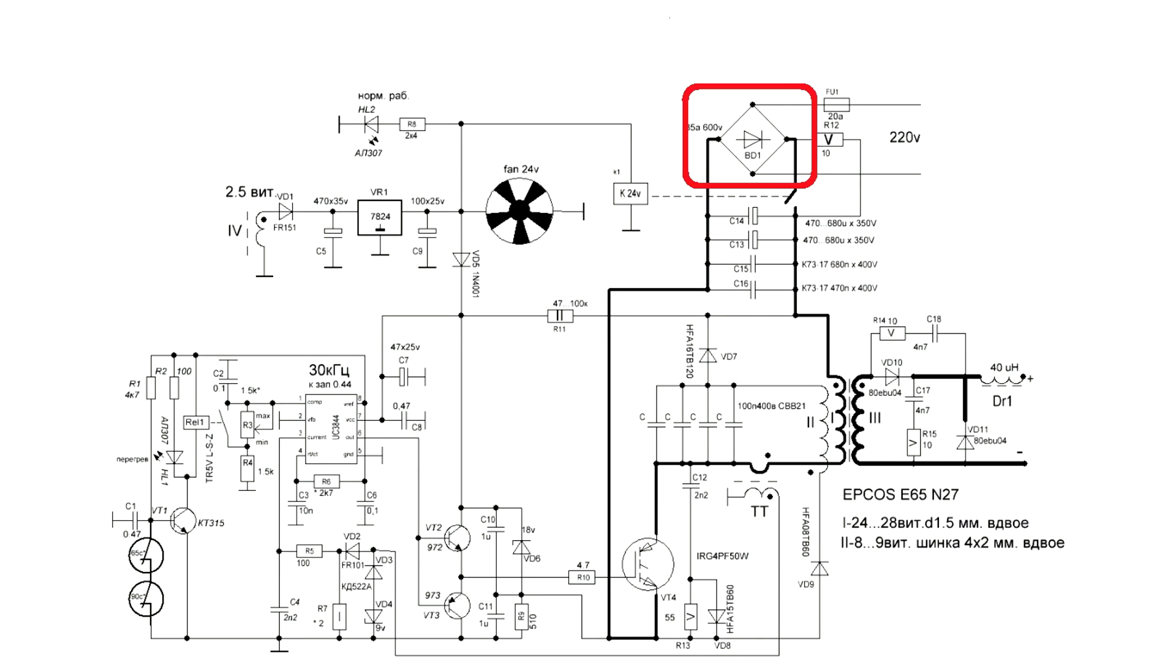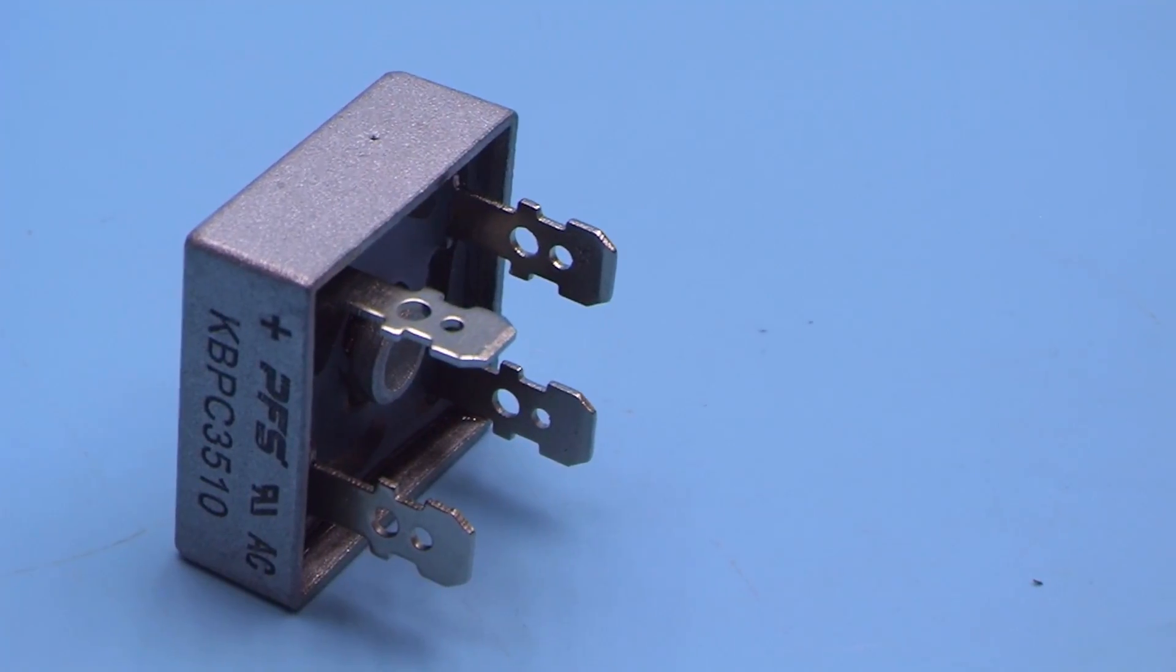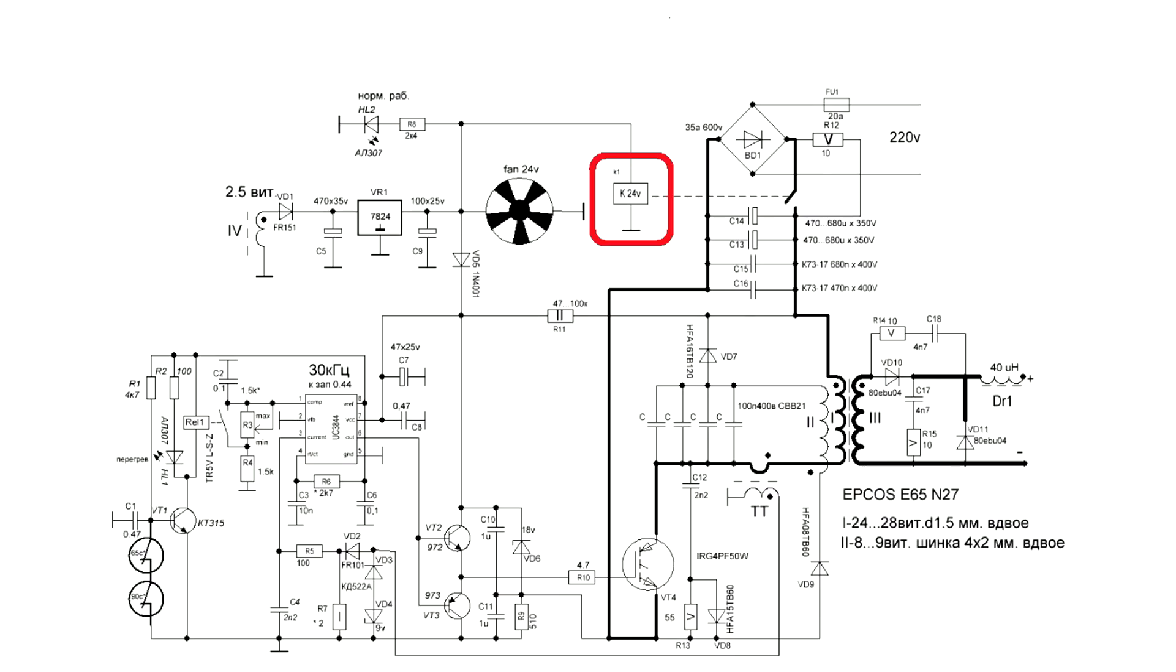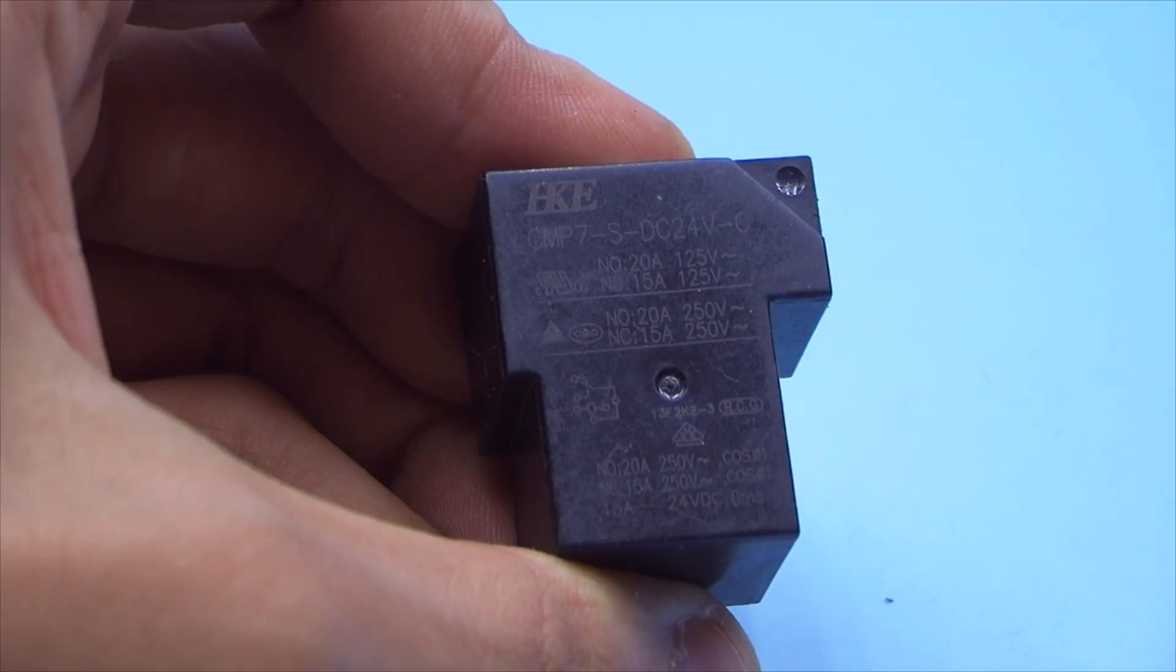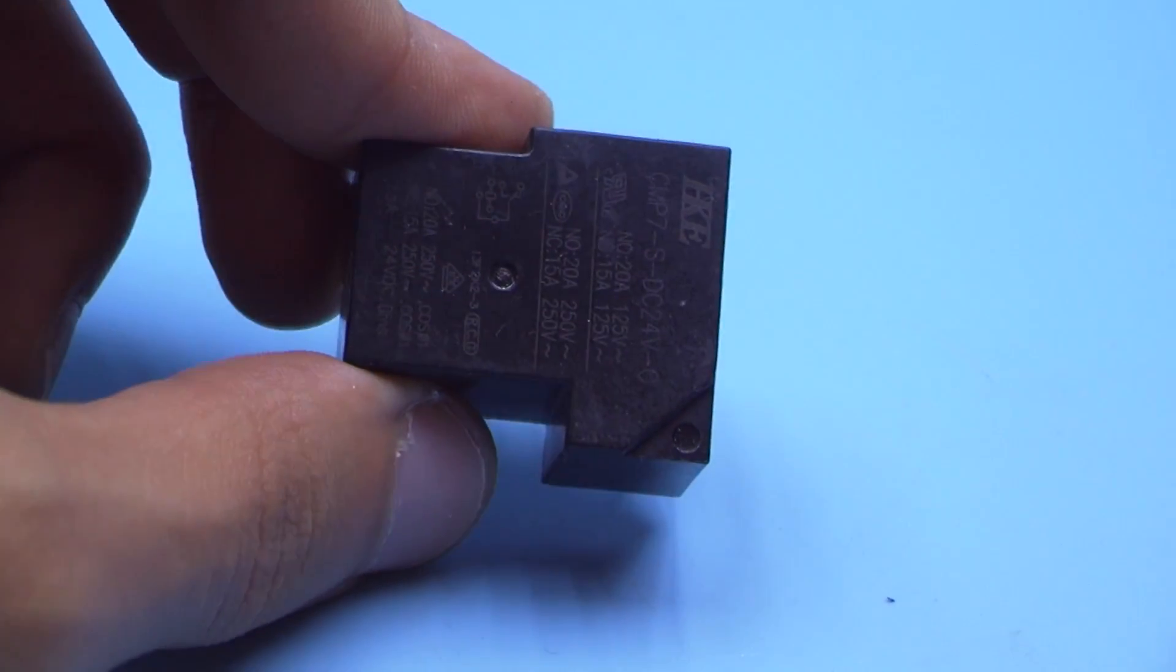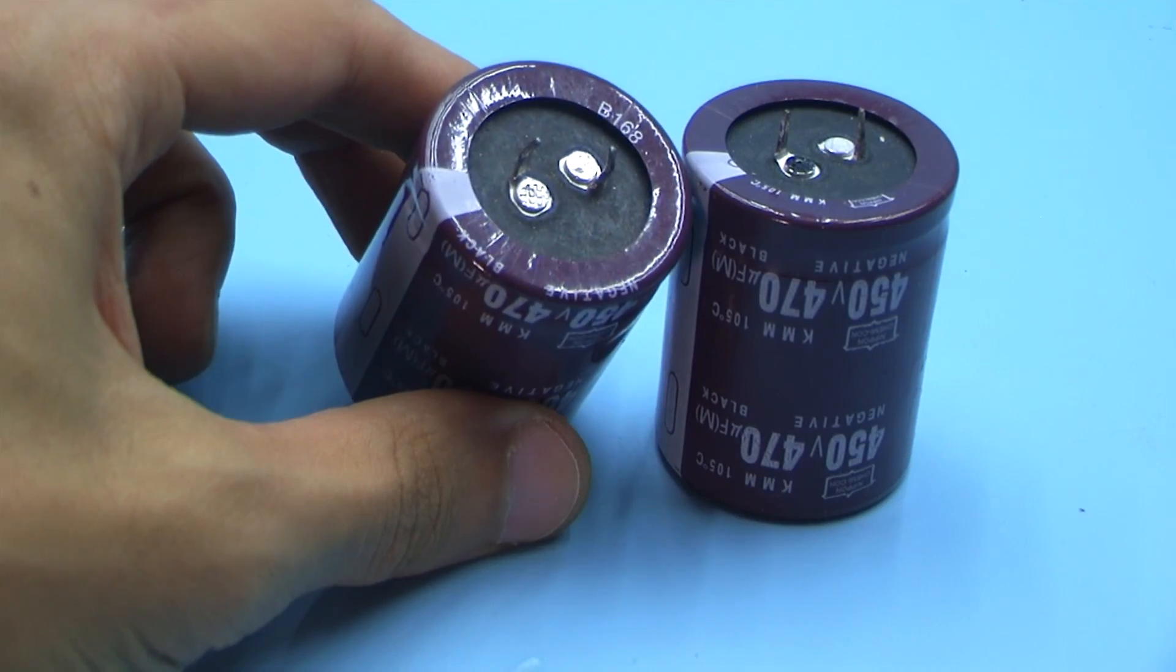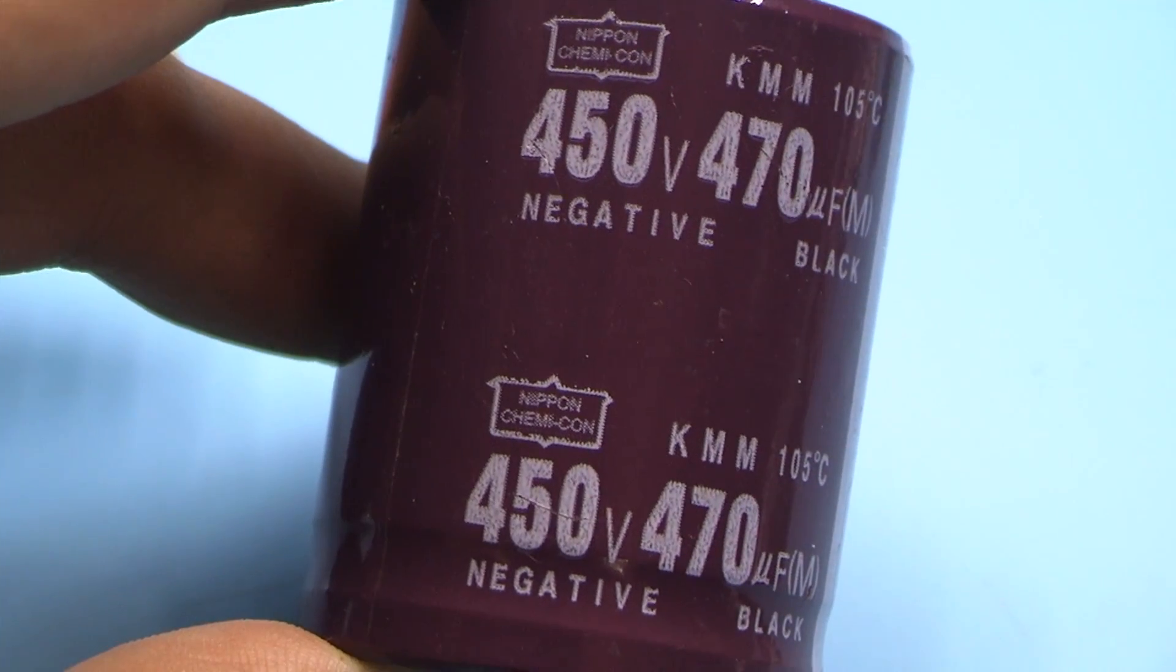Input part. As a diode bridge taken ready assembled KBPC3510. It's for 35 amps, reverse voltage of 1000 volts, mounted on a radiator. The power relay in the soft start circuit with a 24 volt coil is designed for a current of 15 to 30 real amperes. If the welder is planning on currents of more than 120 amps, then it is advisable to use a relay of exactly 30 amperes. Input electrolytic capacitors are for 450 volt, in my case two pieces at 470 microfarads.